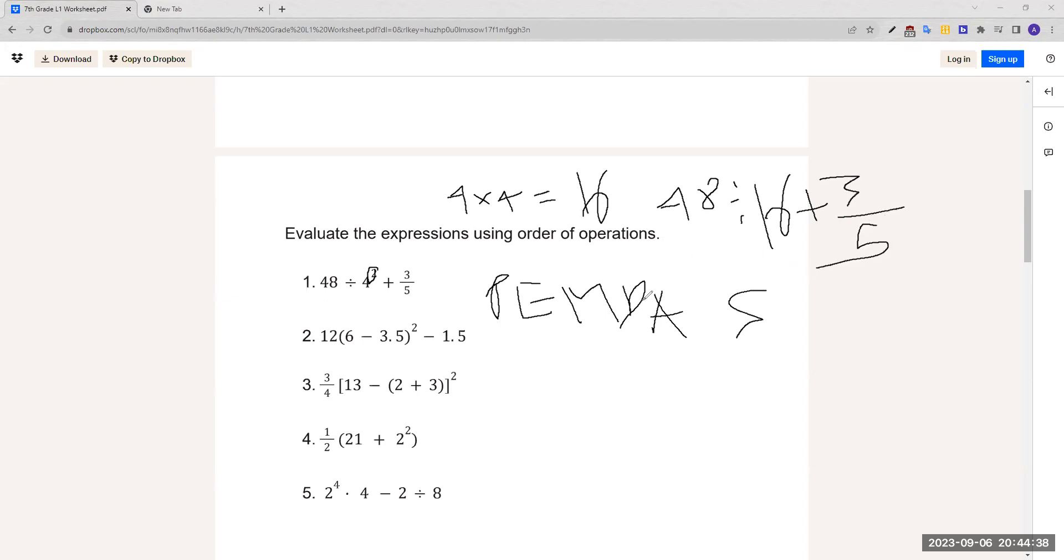Now that would be 48 divided by 16 plus 3 over 5. Like I said earlier, division comes before addition. So it would be 48 divided by 16, which is 3, plus 3 over 5. So that would be 3 and 3 over 5. That's our answer.